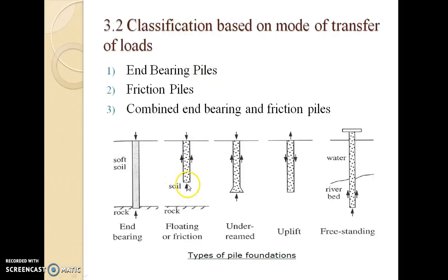In a friction pile, the hard stratum is very far from the tip of the pile, so the load is carried by skin friction alone. There is another type called a combined end bearing and friction pile, where the load is transferred by both the tip of the pile and by skin friction.